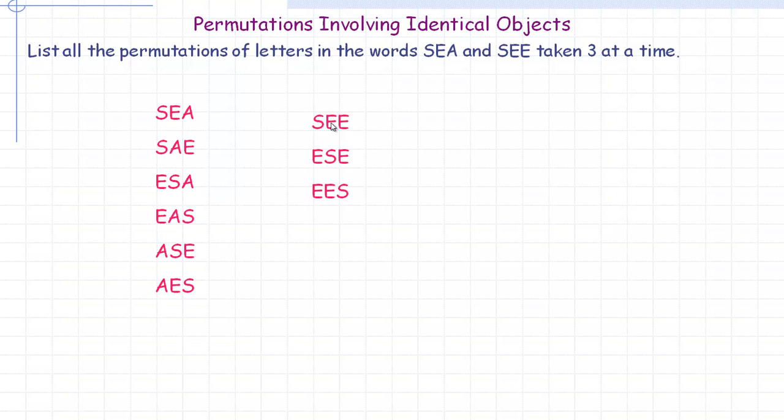Now if you do SEE, the S is either in the first spot or in the middle or at the end. You see the two E's are identical, so it doesn't matter whether I take this one and put it here and this one and put it here, or vice versa, it's still S-E-E because the two E's are the same.